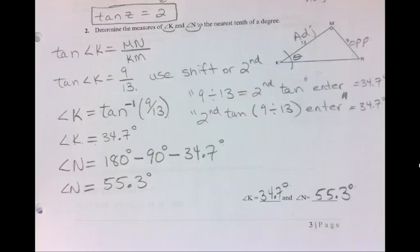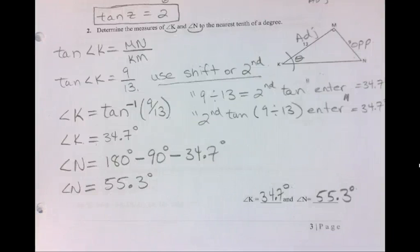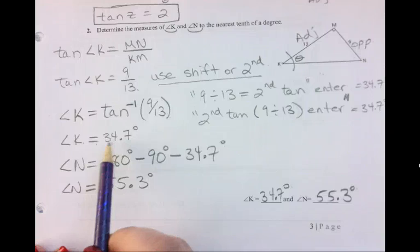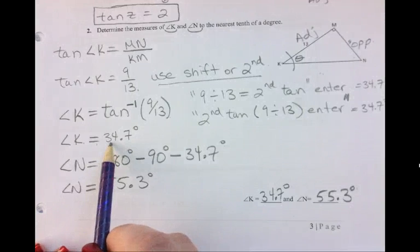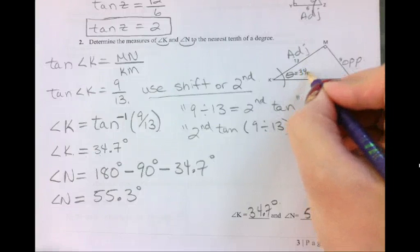So let's go over this question one more time. So we are looking for the angles. So this is when we use our shift or our second function, when we're looking for angles. Now, we figured out the ratio here, and we got that angle K is 34.7. So let's just write that out as 34.7 degrees.